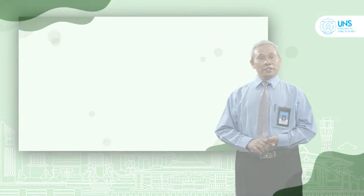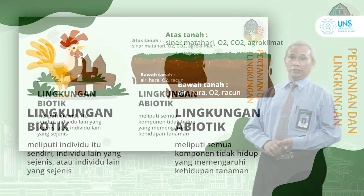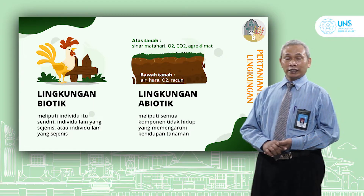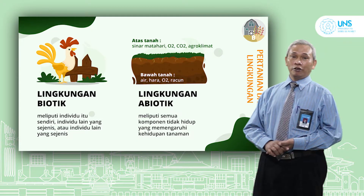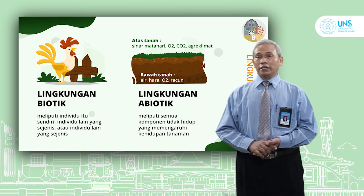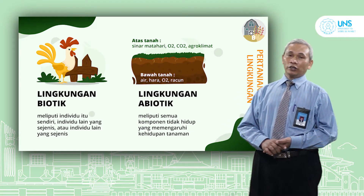Pertanian dan lingkungan mempelajari baik lingkungan biotik maupun lingkungan abiotik. Sebagaimana kita ketahui, di dalam budidaya tanaman itu sangat dipengaruhi oleh kondisi lingkungan baik lingkungan biotik maupun abiotik. Lingkungan biotik meliputi individu itu sendiri, contoh misalkan persaingan untuk mendapatkan unsur hara yang terjadi di antara tanaman sejenis, persaingan dengan jenis tanaman lain maupun persaingan dengan gulma. Kemudian lingkungan abiotik yaitu semua komponen tidak hidup yang mempengaruhi pertumbuhan atau kehidupan tanaman.